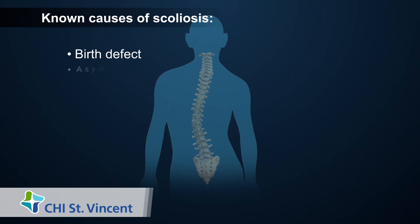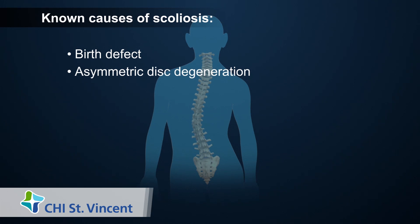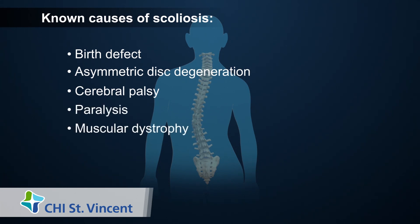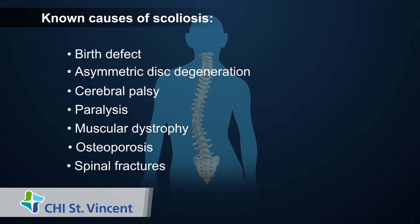The most common cause in adults is asymmetric degeneration of the discs, causing the spine to be tilted to one side or the other. Other causes may include cerebral palsy, paralysis, muscular dystrophy, osteoporosis, or spinal fractures.